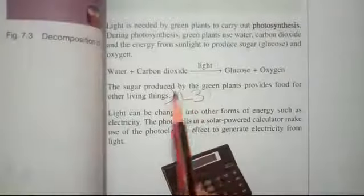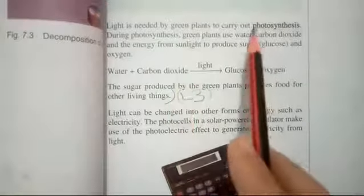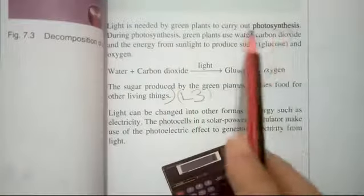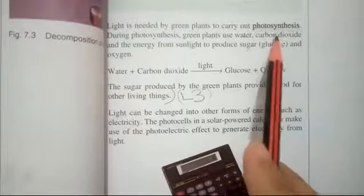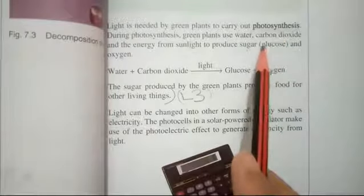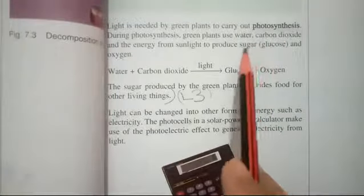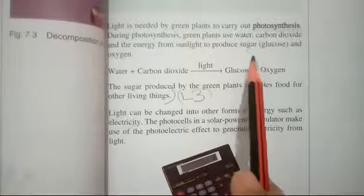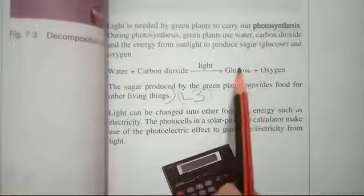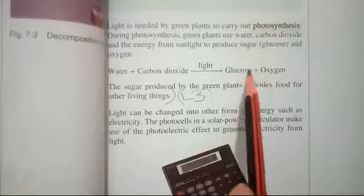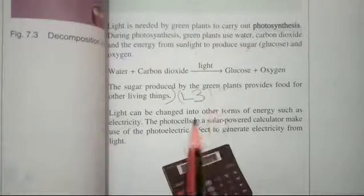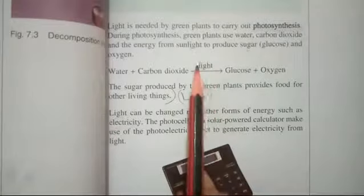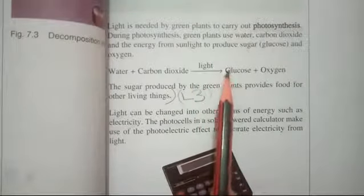Photosynthesis is the food-making process in plants. It is a very important process not only for plants but for other animals and people as well, because 60 to 70% of our food depends on plants. So plants, directly or indirectly, are very much necessary for living things.